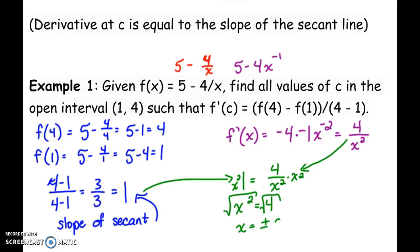Don't forget the positive and the negative. But in this case, only the positive is in our interval. The negative is outside of our interval. Negative 2 is not inside of our interval between 1 and 4. So all we have to worry about is x equals 2. C equals positive 2.